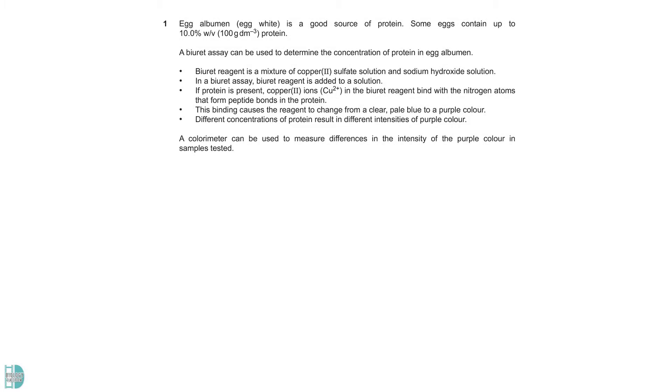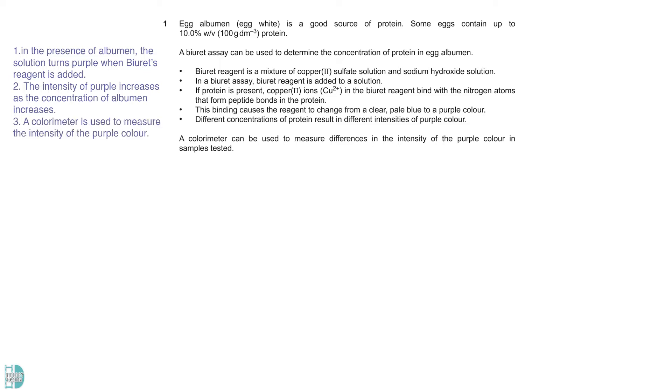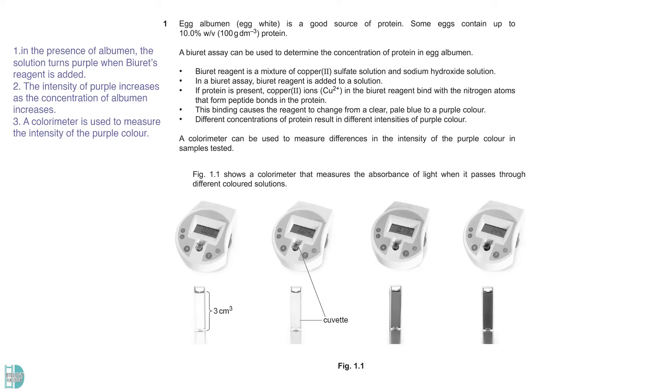Question 1 is about egg albumin and burette assay. There is some information on how burette reagent can be used to test the presence of albumin, which is a type of protein. In the presence of albumin, the solution turns purple when burette's reagent is added. The intensity of purple increases as the concentration of albumin increases. We can use a calorimeter to measure the intensity of the purple color form. Figure 1.1 shows us that when the color is more intense, the reading of absorbance is higher.